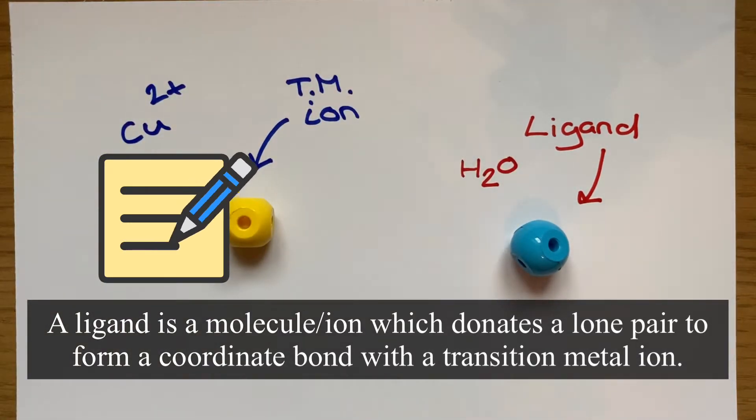So a good example of a transition metal ion is copper II and a good example of a monodentate ligand is H2O.